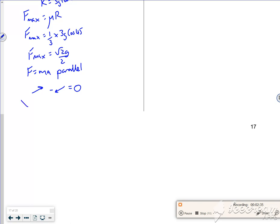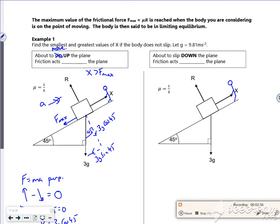So going at X, I've got minus my friction, which is my root 2g over 2. And then I've also got minus my 3g cos 45. That's equal to zero. So if I move it all over, X is roughly 27.7 newtons. So that was working it out as if I'm just about to pull it up the slope.